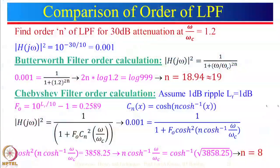In the last lecture we discussed an example of 30 dB attenuation at omega by omega_c equal to 1.2. We saw that using a Butterworth filter we need a filter order equal to 19, whereas using 1 dB ripple Chebyshev we need a filter order equal to 8. If you take 0.5 dB ripple, the order will be more than 8 but much less than 19. I will also show you the responses for these two cases and explain the disadvantage of using 1 dB ripple.